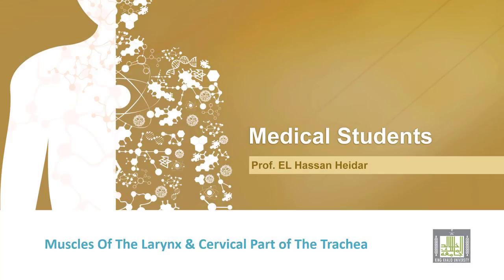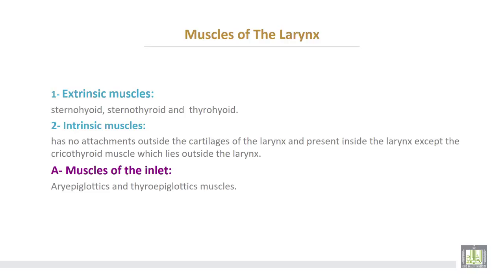Muscles of the larynx and the cervical part of the trachea. The muscles of the larynx are divided into two groups: extrinsic muscles and intrinsic muscles. The extrinsic muscles are formed by sternohyoid, sternothyroid, and thyrohyoid muscles. The intrinsic muscles have no attachment outside the cartilage of the larynx and are present inside the larynx, except the cricothyroid muscle which lies outside the larynx.